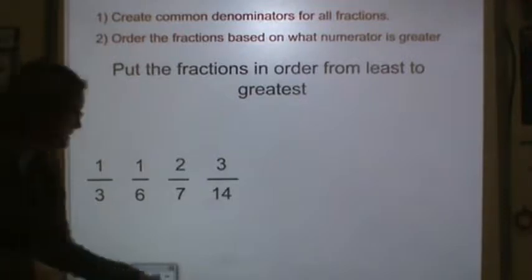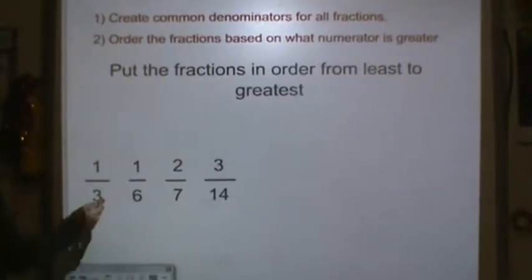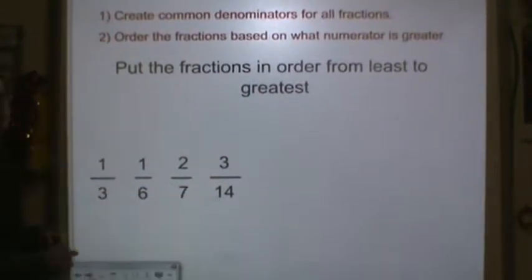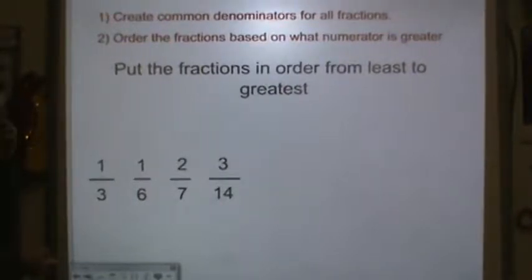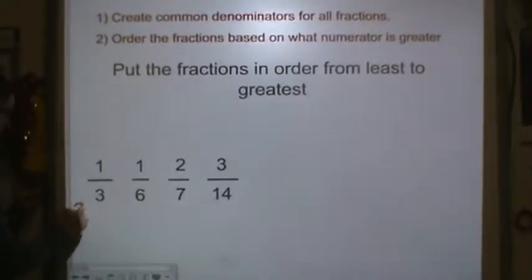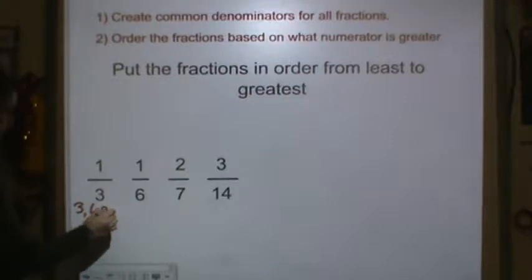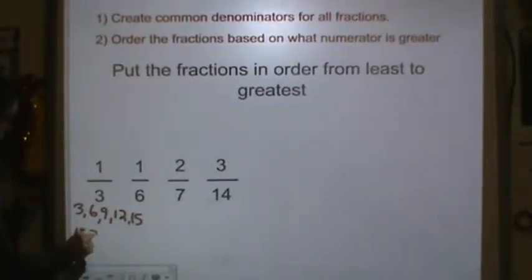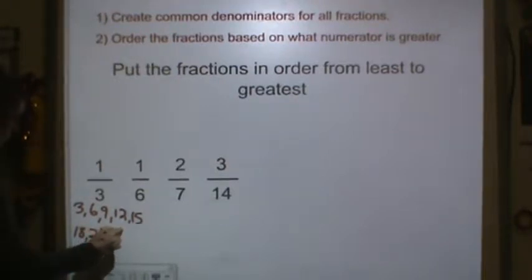First, we need to make a common denominator for every single one of these fractions. So we have 3, let's start writing some multiples: 3, 6, 9, 12, 15, 18, 21, 24, 27, 30.